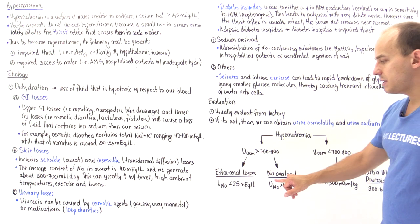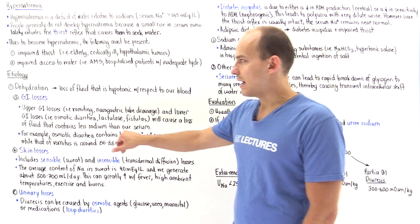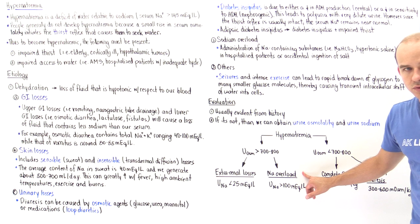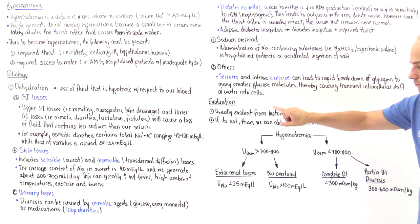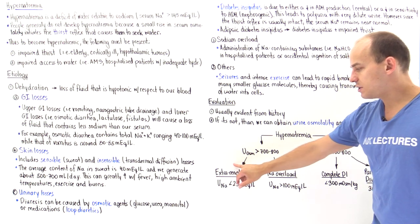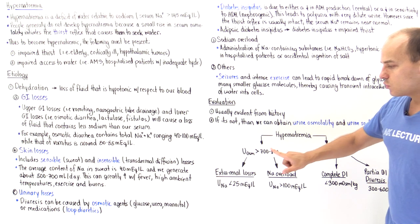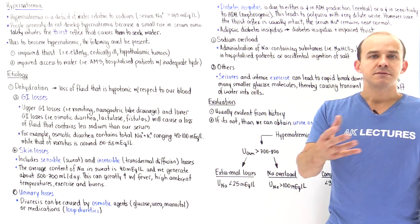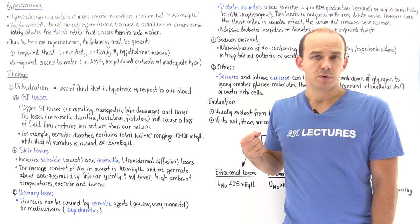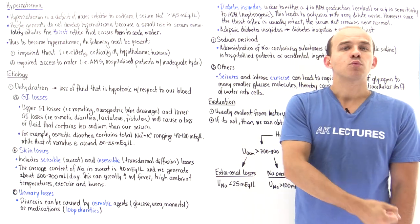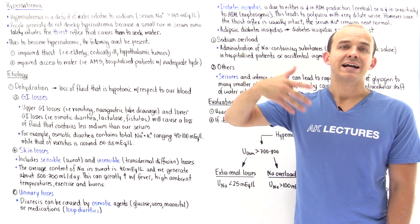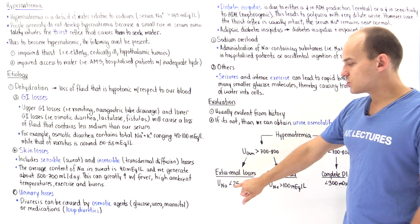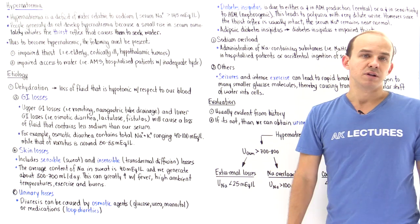So in these patients, urine is very concentrated — osmolality above 700 to 800 milliosmoles per kilogram. This means either extra-renal losses (GI or skin losses) or sodium overload. We differentiate these using urine sodium. If urine sodium is below 25 milliequivalents per liter, the kidneys are functional and reabsorbing sodium via aldosterone acting on the distal nephron, pulling more water back into the blood.